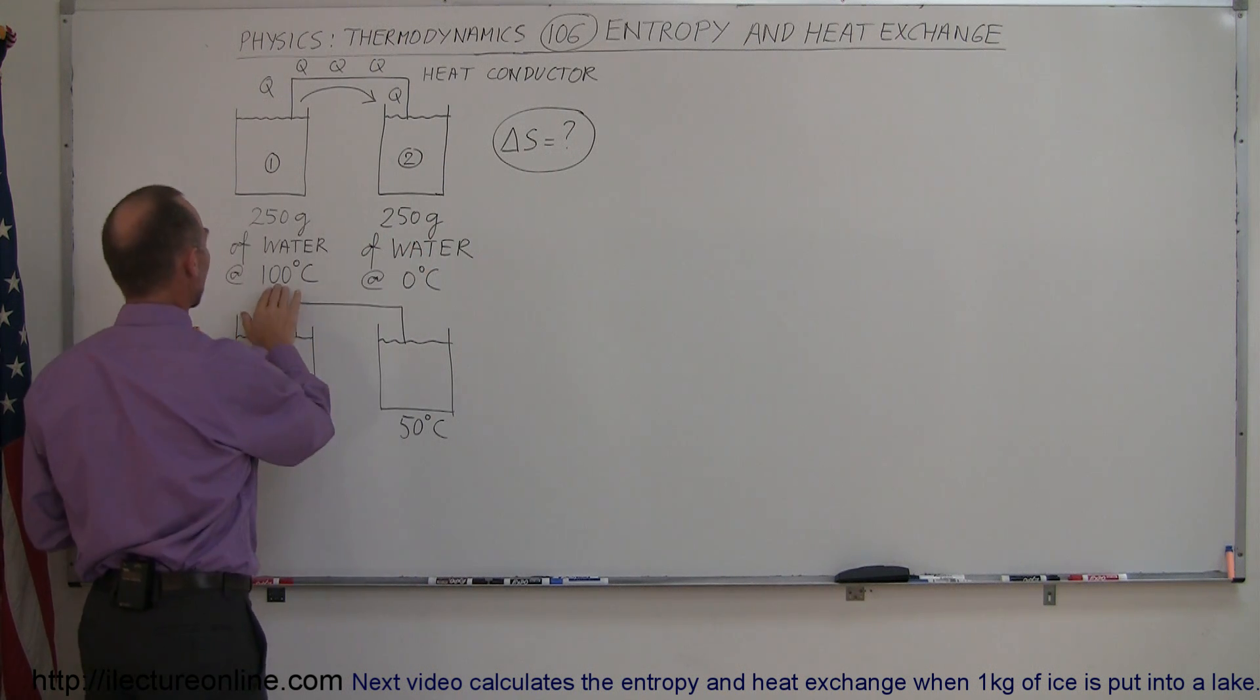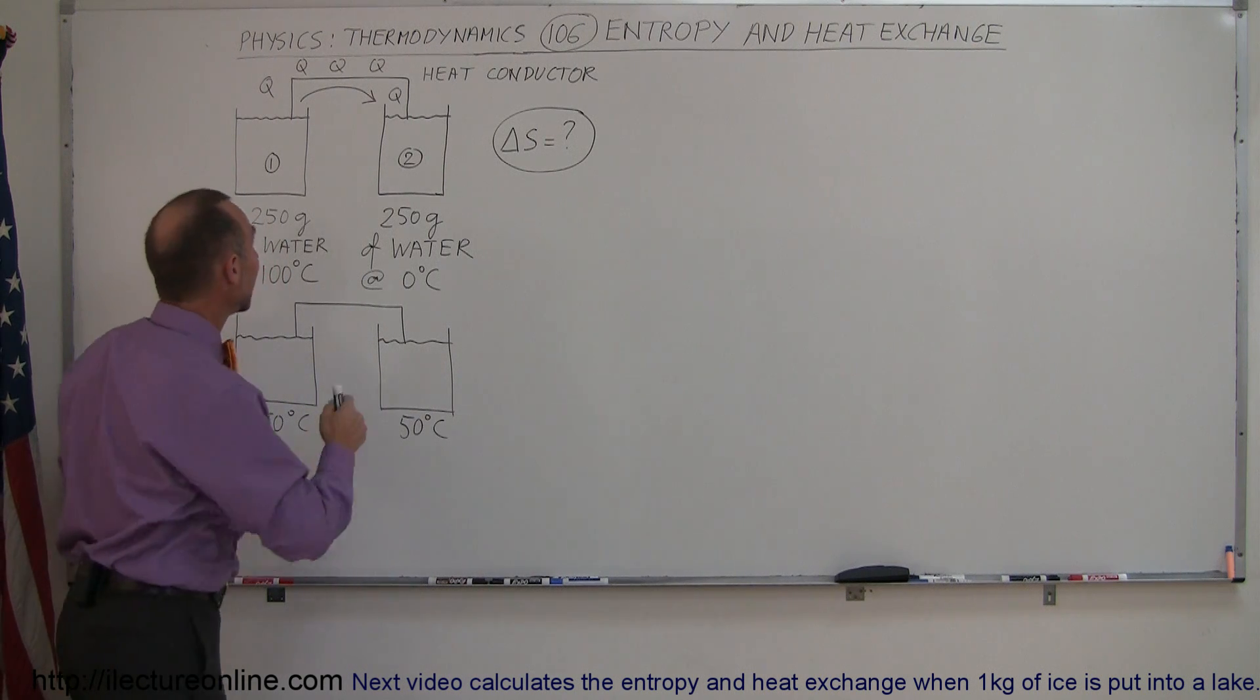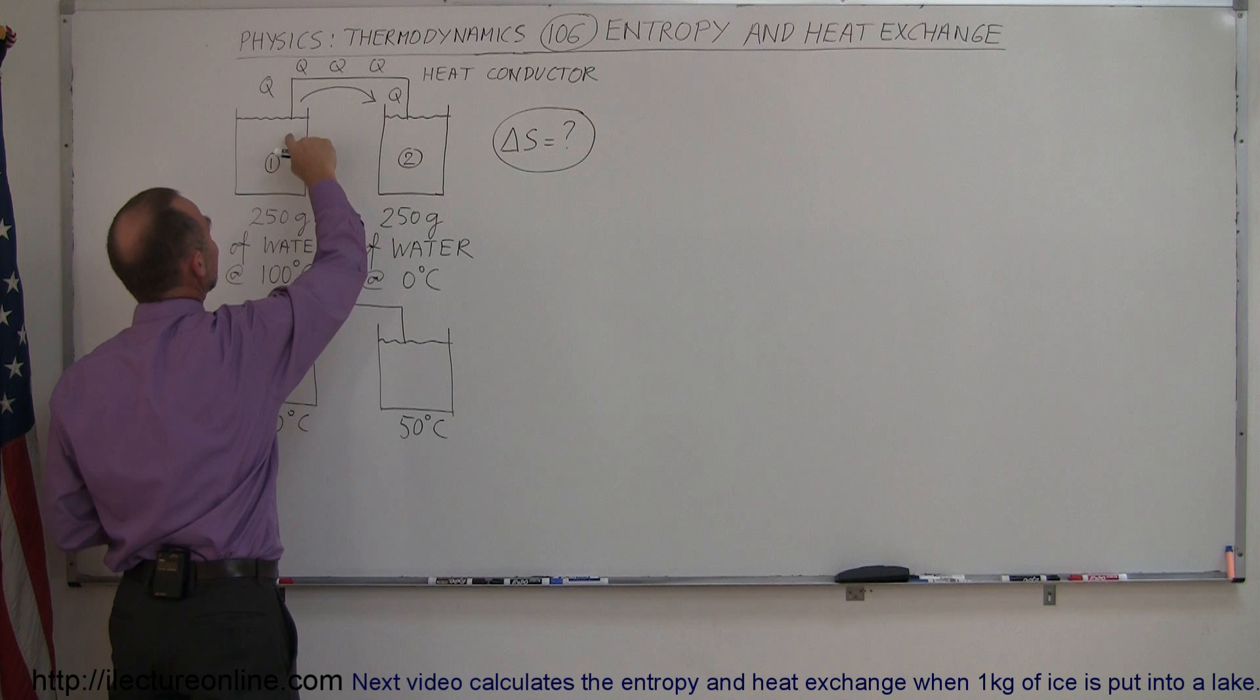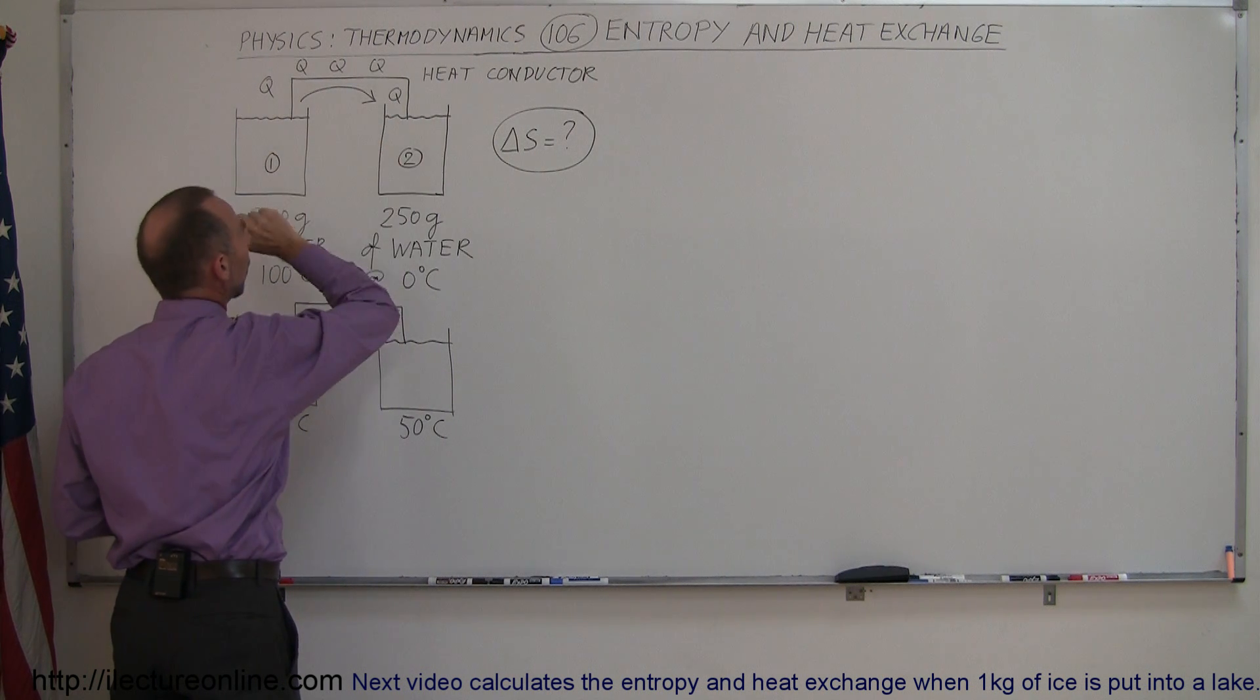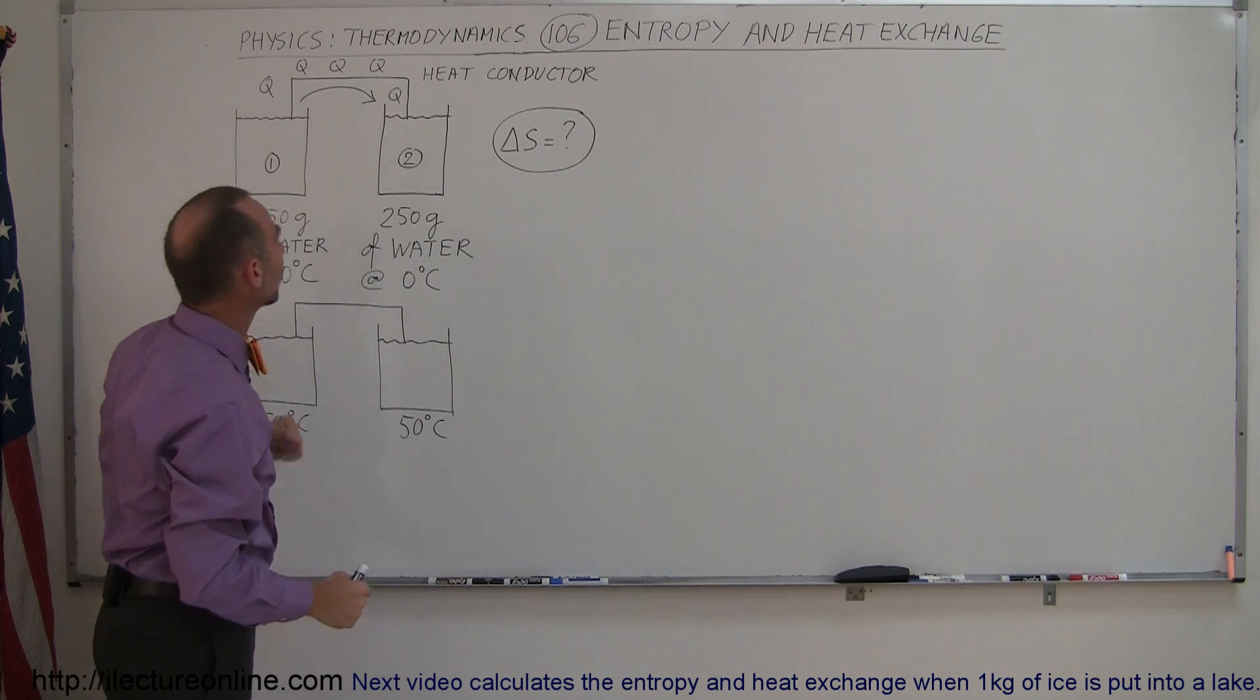And we have a cold cup of water, same amount, 250 grams. The hot cup is 100 degrees centigrade. The cold cup is at 0 degrees centigrade. And there is a heat conductor that connects the two cups so that heat can travel from the hot cup to the cold cup.